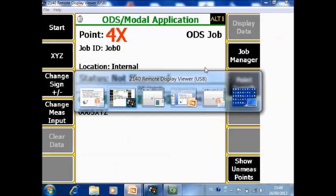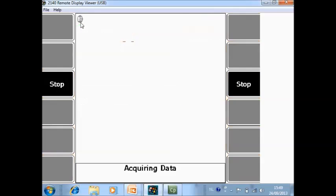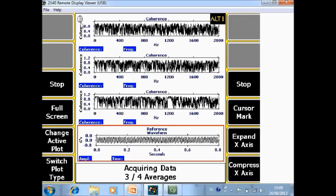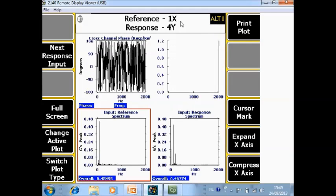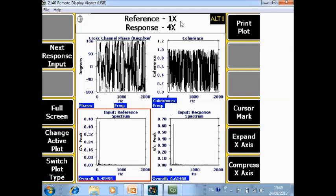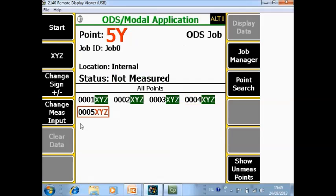How to do that on the analyzer? On the analyzer I am now at 4X. F3 I make it negative. Then I toggle to the Y. I make also the Y negative. And now I can collect the data. You can also review the data for Y, Z and X. And I will continue with point 5.